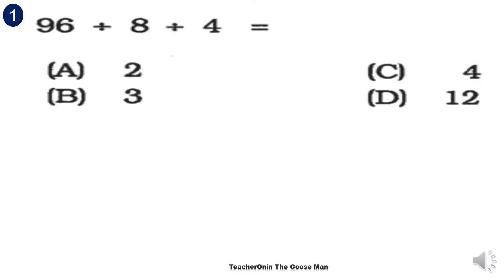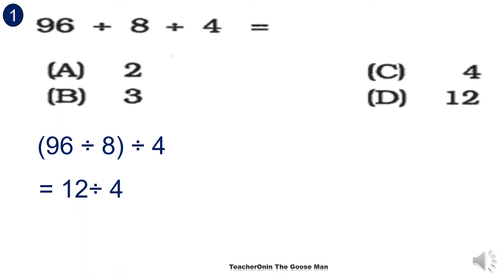We have 96 divided by 8 divided by 4. We will perform the operation from left to right. So 96 divided by 8 gives me 12, then divided by 4. So 12 divided by 4 will give me 3. The correct answer is letter B.